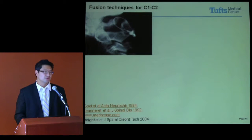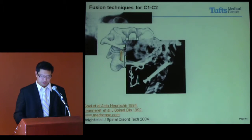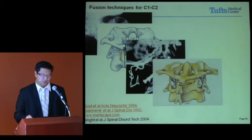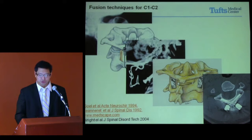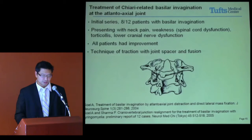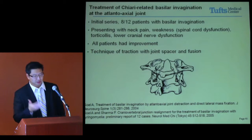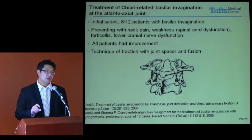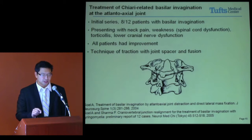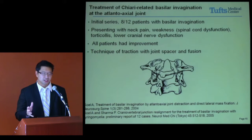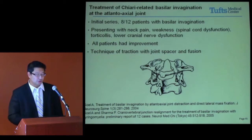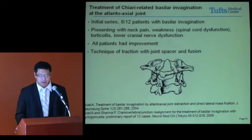Different fusion techniques were discussed — many here are familiar with books and daily fusions — from variations of the Sonntag technique to transarticular screws, as well as translaminar screws in children where fixation can be more difficult. Dr. Gould described an interesting distraction technique: a 3-4 mm spacer placed into the joint along with C1-2 fusion. Eight of 12 patients had a Chiari malformation and basal invagination, and results and outcomes were good in that clinical series.